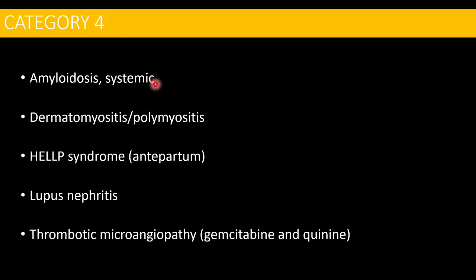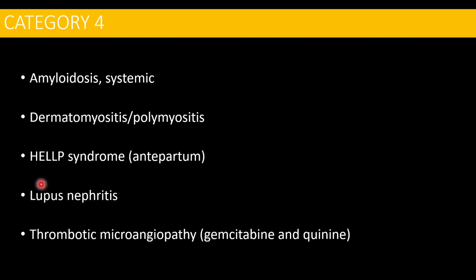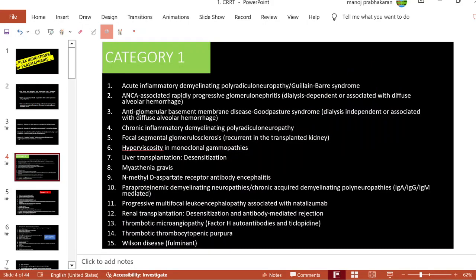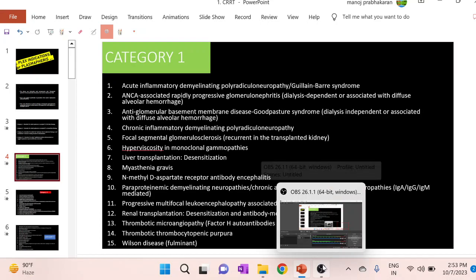The last category, Category 4, is where plasmapheresis is of less benefit. This includes systemic amyloidosis, polymyositis, and HELLP syndrome. Lupus nephritis has been reclassified — if not responding to medication and associated antiphospholipid syndrome is suspected, it comes under Category 3. These are the important indications of plasmapheresis under various categories. Under each category, knowing two or three diseases will be useful for your exam.